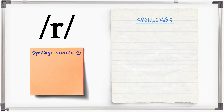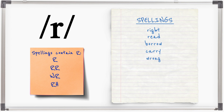R is always spelt with R, sometimes with an additional consonant: write, read, borrow, carry, wrong, wrist, rhythm, rhino.